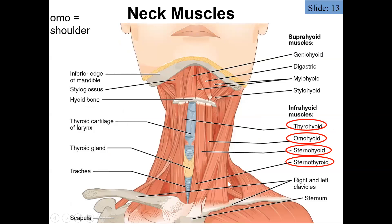Here's another view of those muscles. We see the sternohyoid from the sternum to the hyoid, the sternothyroid from the sternum to the thyroid cartilage, and then the thyrohyoid — a much smaller piece — from the thyroid cartilage to the hyoid bone.